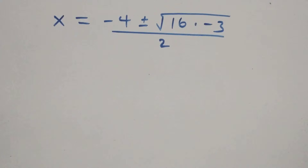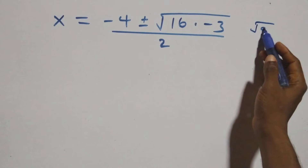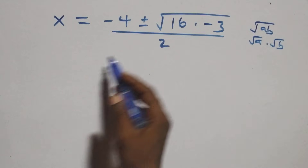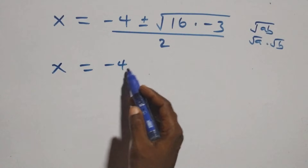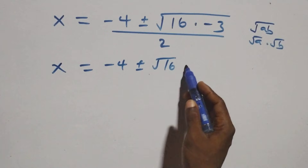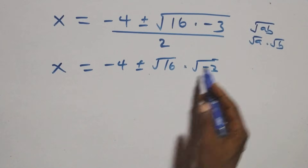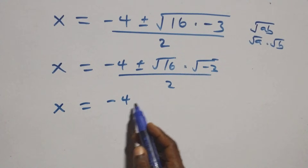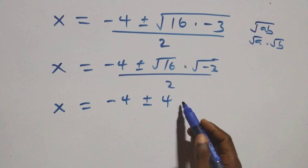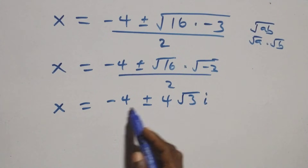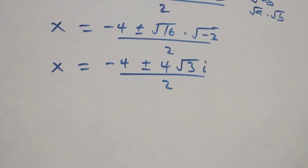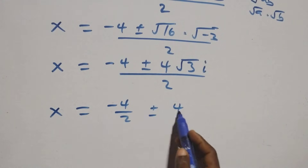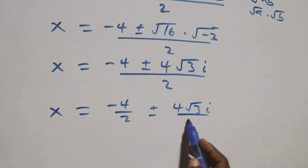Since root(a·b) = root(a)·root(b), we can write x equals minus 4 plus or minus root 16 times root of minus 3, over 2. This becomes x equals minus 4 plus or minus 4 times root 3i, over 2. Separating into two fractions: x equals minus 4/2 plus or minus 4√3i/2, giving x equals minus 2 plus or minus 2√3i.